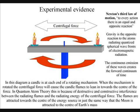In this diagram, a candle is at each end of a rotating mechanism. When the mechanism is rotated, the force will cause the candle flames to lean in towards the center of the force. In quantum atom theory, this is because of destructive and constructive interference between the radiating flames and the radiating energy of the force.